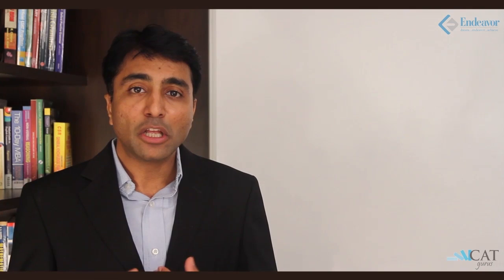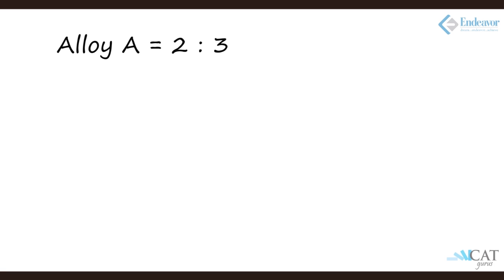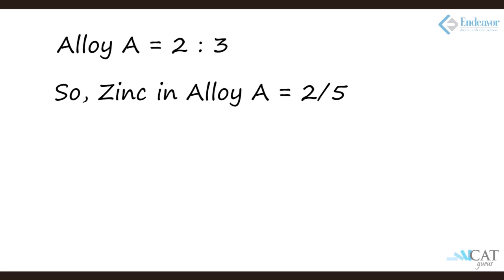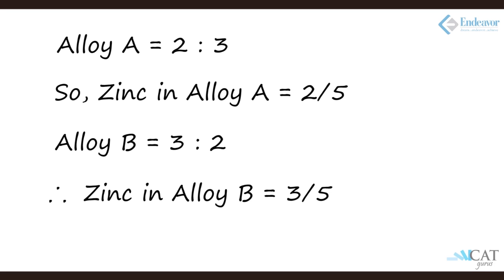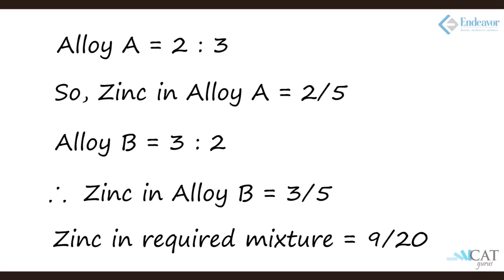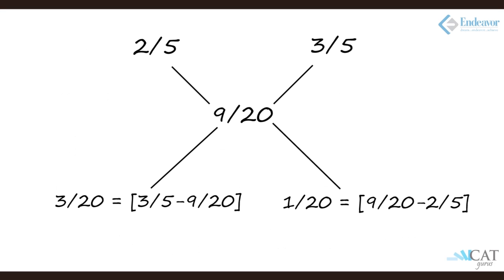We represent this graphically. Alloy A has zinc to tin as 2 is to 3, so the proportion of zinc in alloy A is 2/5. The proportion of zinc in alloy B is 3/5. The desired proportion of zinc in the mixture is 9/20. Using allegation: 9/20 minus 2/5 gives 1/20, and 3/5 minus 9/20 gives 3/20.